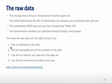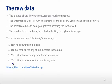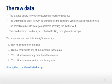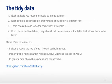You know the raw data is in the right format if - and this is a critical one - you ran no software on the data. Someone else might have run some software on the data, but by the time it was handed to you there was absolutely no software that was run, and you didn't manipulate any of the numbers in the data set, or remove any of the data, and you didn't do any summarization in any way. The unadulterated raw data should be one component of having a tidy data set handed over to a collaborator.